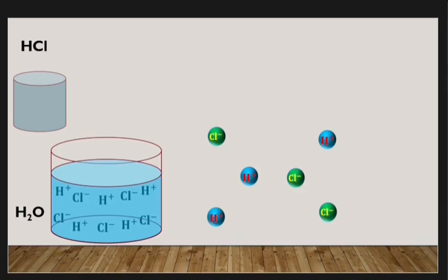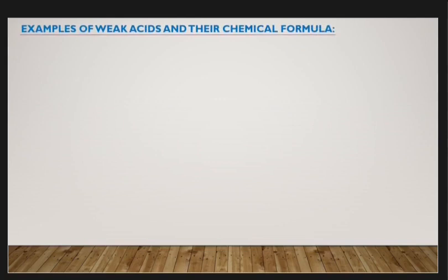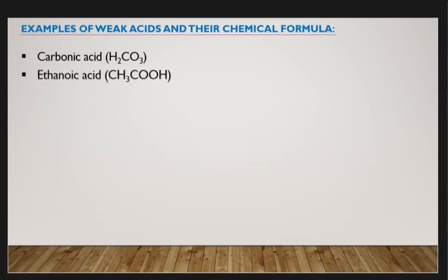Now let's look at examples of weak acids and their chemical formulas. First, we have carbonic acid whose formula is H₂CO₃. Second, we have ethanoic acid whose formula is CH₃COOH. Third, we have phosphoric acid whose formula is H₃PO₄. These are some of the weak acids also found in the school laboratory.